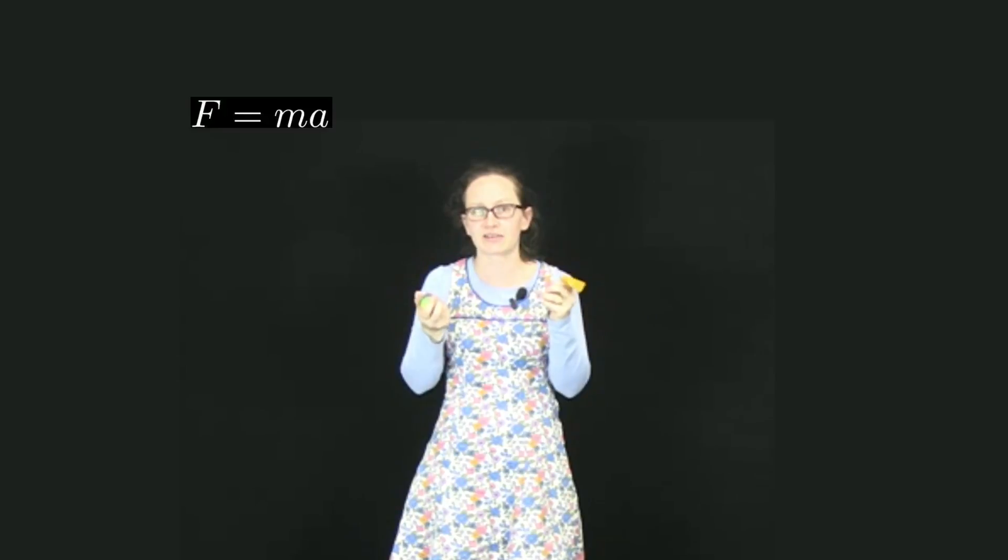Gravity pulls all objects down towards the center of the Earth. We have a formula to describe the gravity felt by objects on the surface of the Earth. Because gravity is a force, we write this equation as F is equal to the mass of the object times the acceleration it feels due to gravity.